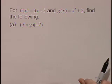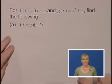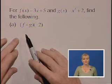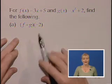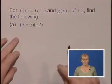For F of X equals 3X plus 5 and G of X equals X squared plus 2, find the following. Part A asks us for F of G at negative 2. This is a composition.